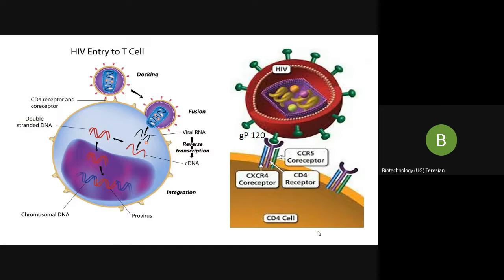HIV affects the immune system if untreated and causes immune failure. When immune deficiency occurs, it is called AIDS. AIDS is a fully blown-up disease — it is the last stage of HIV if untreated. AIDS stands for Acquired Immune Deficiency Syndrome.